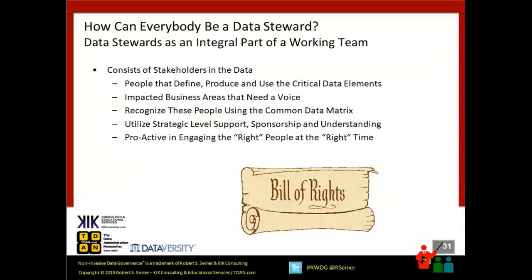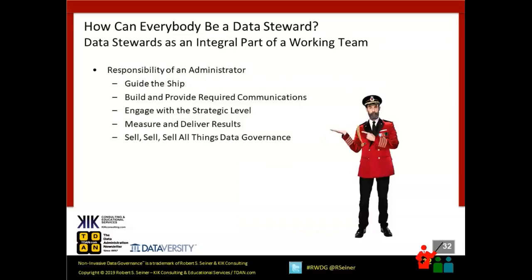I talk about something called the data governance bill of rights — getting the right people involved at the right time using the right data. We need to know who the stakeholders are in the data being focused on by a working team. We'll look for people that define, produce, and use that data, look at the different business areas being impacted, and go back to the common data matrix to record who does what. Data governance is about doing the right thing at the right time and getting the right people involved.